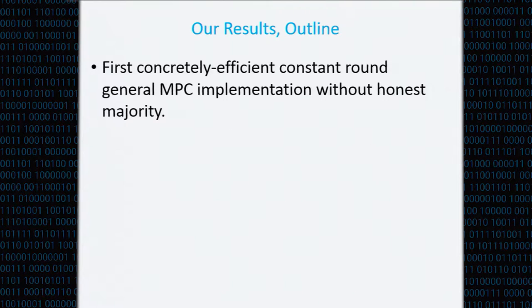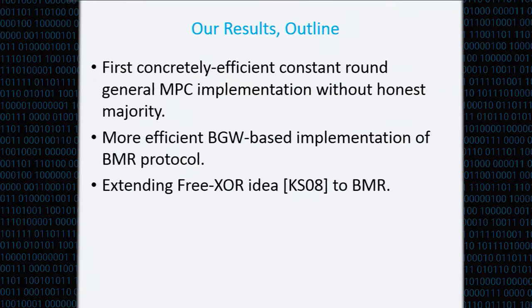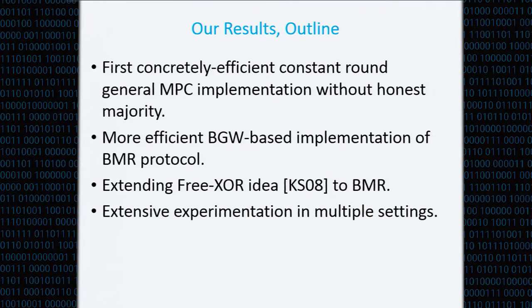We construct the first concretely efficient constant-round MPC implementation that does not require an honest majority — it is secure even if all parties but one are corrupt. Following FairplayMP, which implemented the BMR protocol using BGW, we also implemented the BMR protocol using BGW, however much more efficiently. We also extended the FreakStore idea of Kolesnikov and Schneider to the BMR protocol, and we did experimentation in multiple settings.